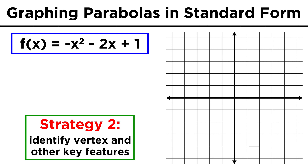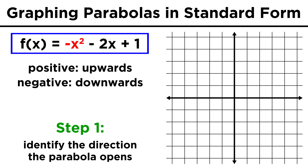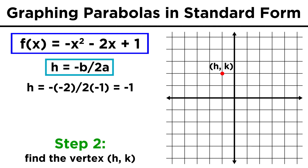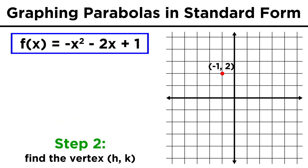Now let's try the other way we mentioned, where we leave the equation as it is. The first step in this algorithm is to figure out whether the parabola opens upwards or downwards. We look at a and see if it is positive or negative. If the coefficient is positive, it opens up; if negative, it opens down. In this case, the coefficient is negative one, so it opens down. The next step is to find the vertex. The x coordinate is equal to negative b over two a, which in this case equals negative one. Once we have that, we plug it into the function to get the corresponding y value, which in this case is two. This confirms that the vertex is at the point negative one, two.